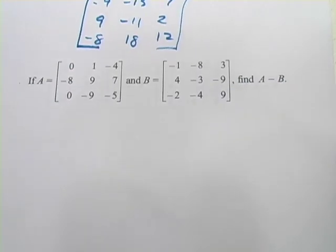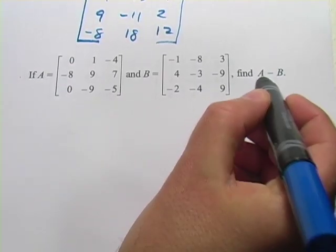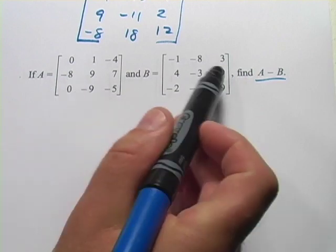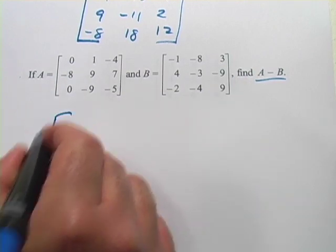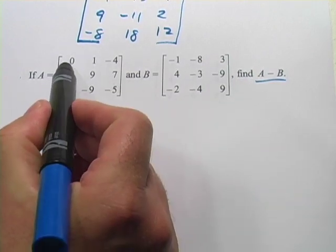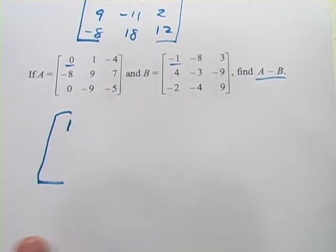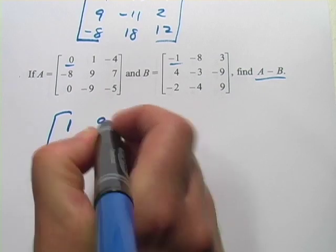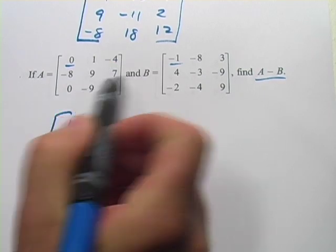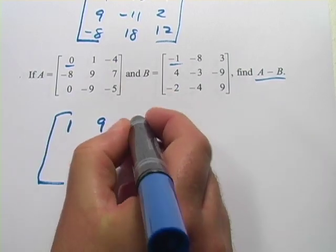Let's just do one more here. Not too much harder, we're just finding A minus B, so we're going to subtract the elements that are in the same positions. So the first one would be 0 minus negative 1, that's actually positive 1, 1 minus negative 8, that's positive 9, negative 4 minus 3 would be negative 7.